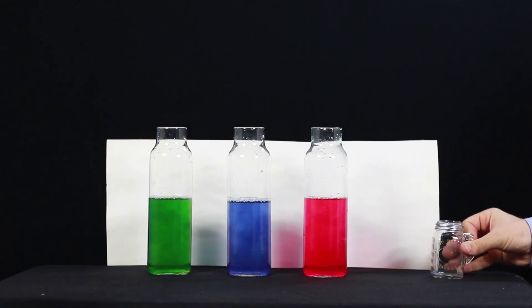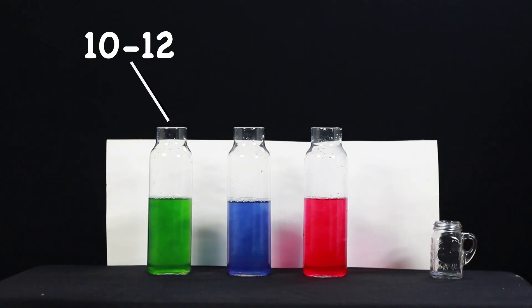For example, a bright green color indicates a pH between 10 and 12, a bluish-purple color indicates a pH between 6 and 8, and a pinkish-red color indicates a pH between 2 and 4.